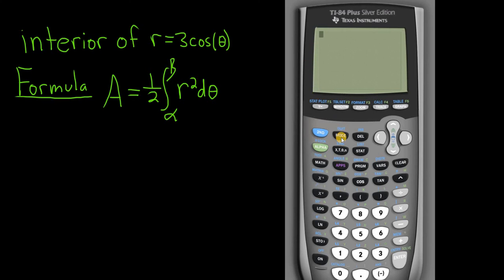The first thing you want to do is put your calculator in polar mode. So you want to click here on mode and go down here to polar and hit enter. So change the mode to polar.